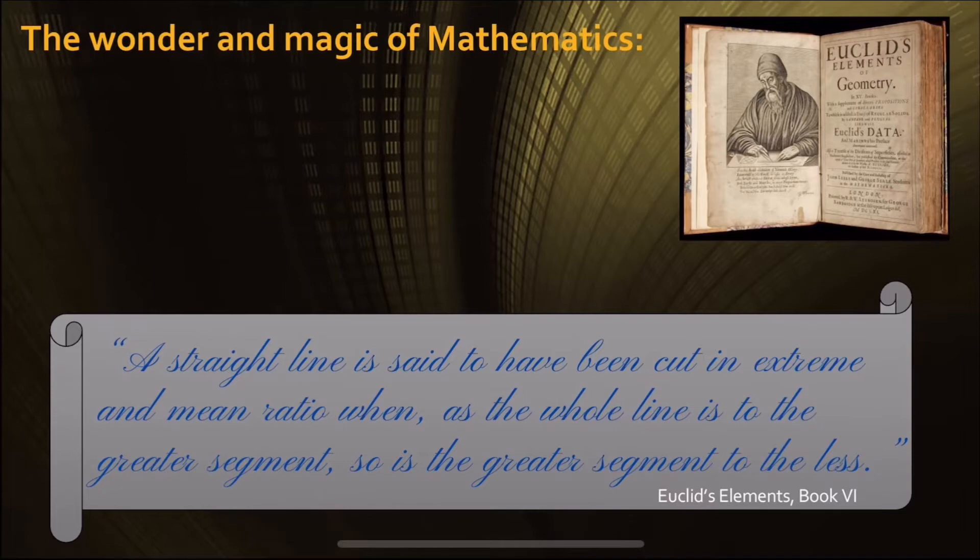And let's read his definition of the golden ratio. A straight line is said to have been cut in extreme and mean ratio when, as the whole line is to the greater segment, so is the greater segment to the less. Okay, so what does this actually mean?